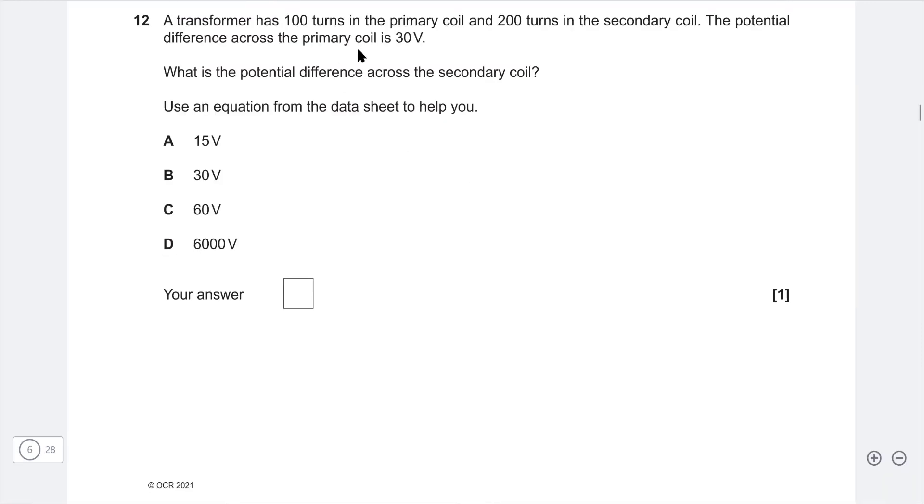Next one. A transformer has 100 turns in the primary coil, 200 turns in the secondary coil. The potential difference across the primary coil is 30 volts. Now first of all, this is a step-up transformer because it has 100 turns in the primary and 200 turns in the secondary. So the step-up ratio is 2, meaning that the voltage will increase by a factor of 2. So 2 times 30 is just 60 volts. Therefore correct answer is C.